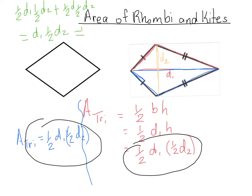We can rearrange it a bit and we get a half times diagonal one times diagonal two, and that's how you figure out the area of a kite or a rhombus. So let's do an example.